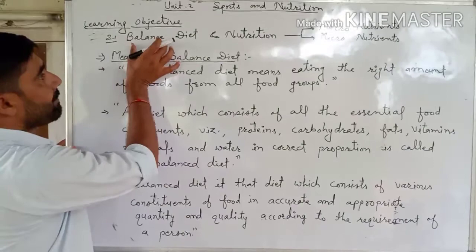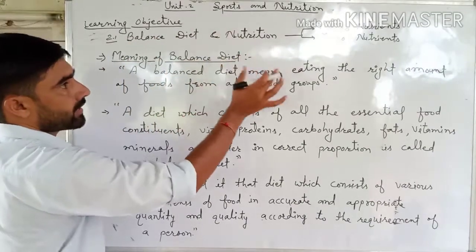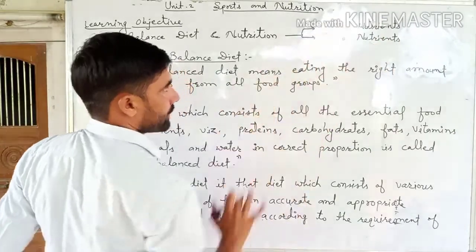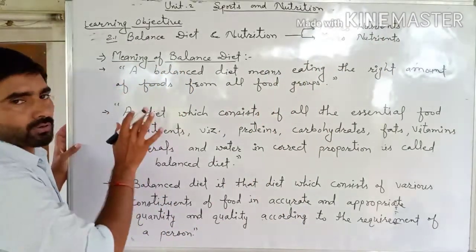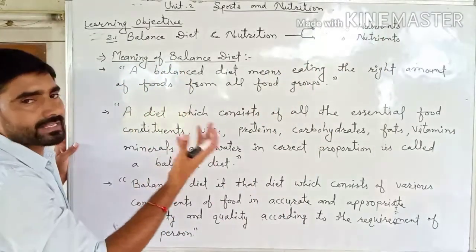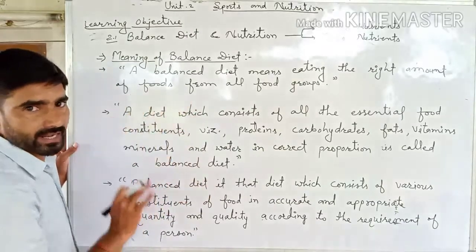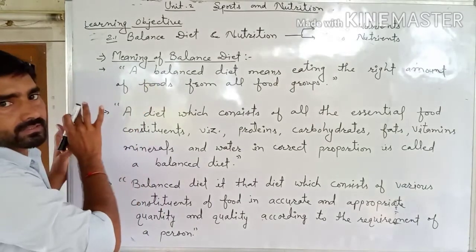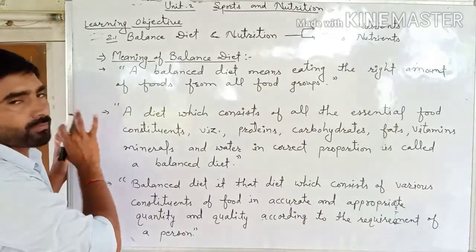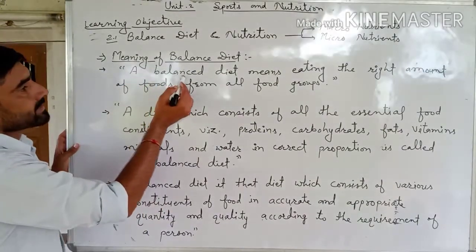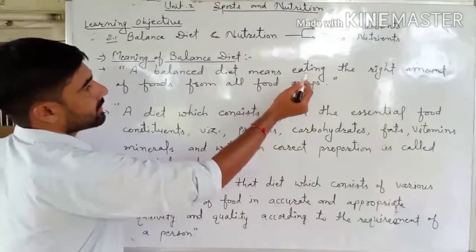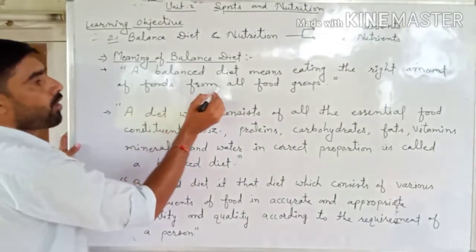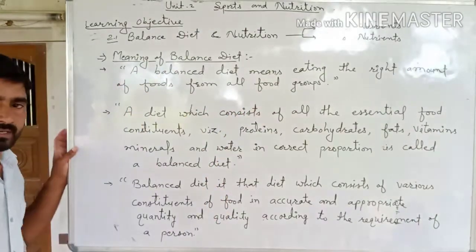The first learning objective is balanced diet and nutrition — macronutrients and micronutrients. First of all, what do you mean by balanced diet? A balanced diet means eating the right amount of foods from all food groups.